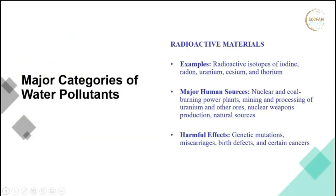Another important category is radioactive minerals like iodine, radon, uranium, cesium, and thorium. The major sources are nuclear and coal-burning power plants, mining, and processing. These are not widespread pollutants but are significant near locations where radioactive minerals are used. Radioactive minerals release certain radiations that can cause genetic mutations, miscarriages, birth defects, and diseases like cancer.